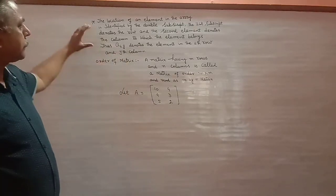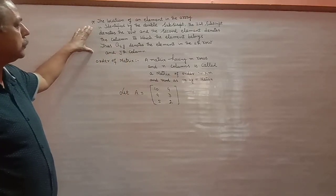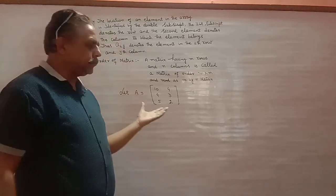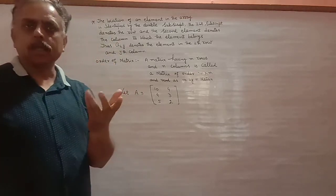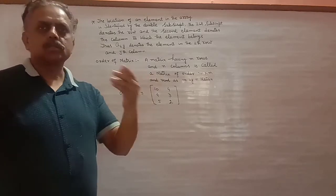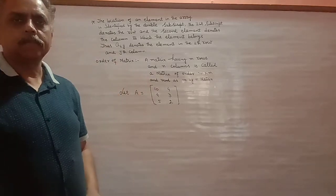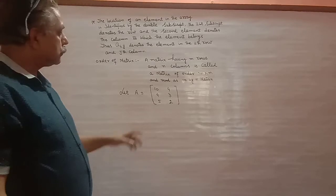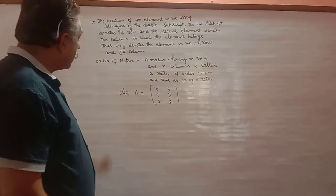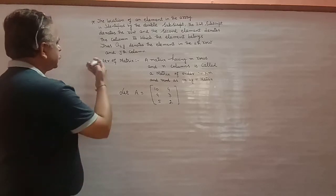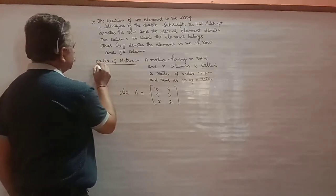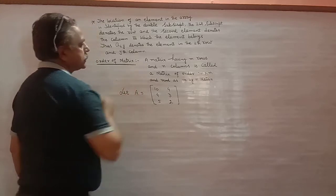तो यह है कि जब हम किसी element को matrix में लिखते हैं, तो उसको denote करना है कि first row और second column का element कौन सा है, तो वो हम इस तरीके से बता सकते हैं। इसके बाद एक important चीज है जो आपने note करनी है — order of matrix.